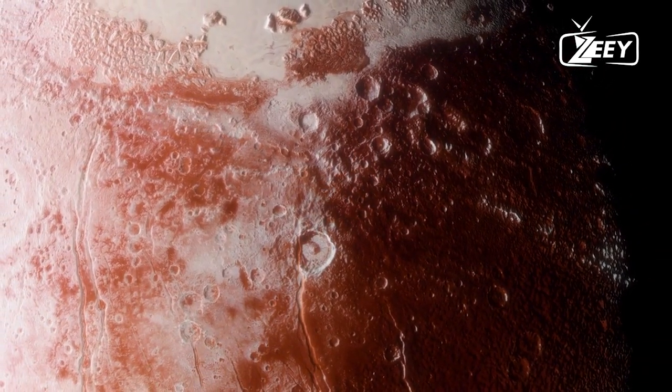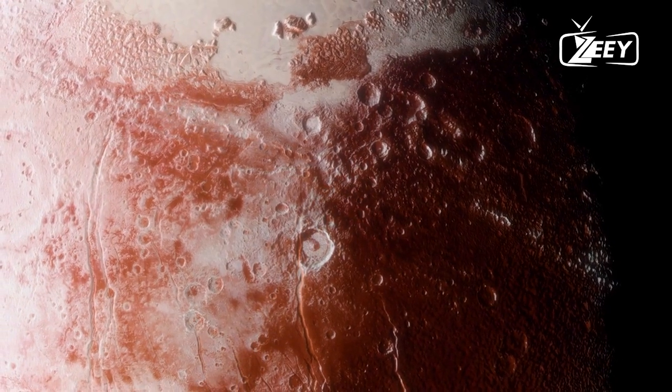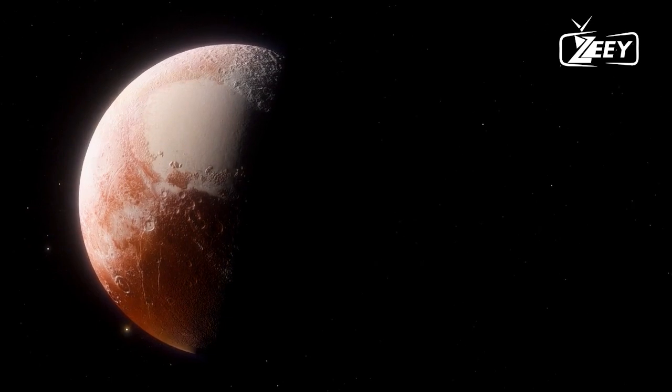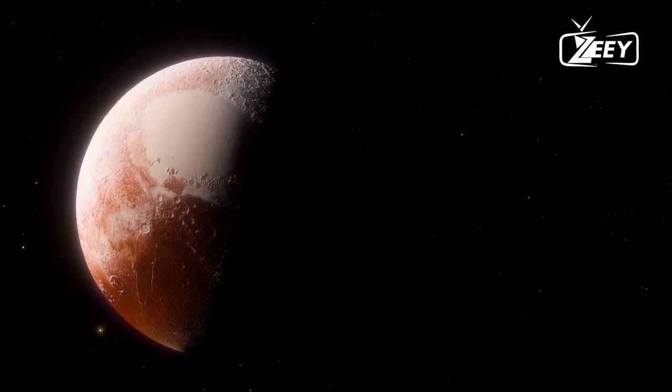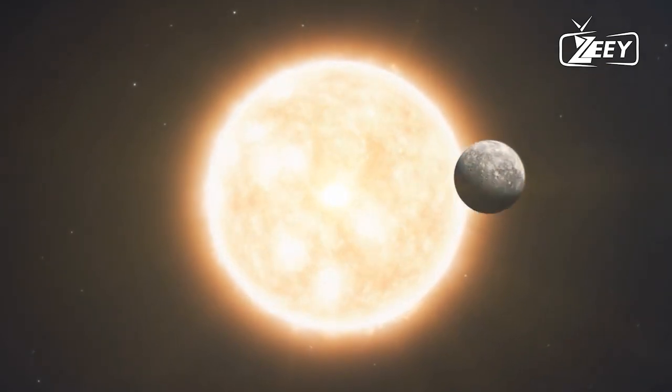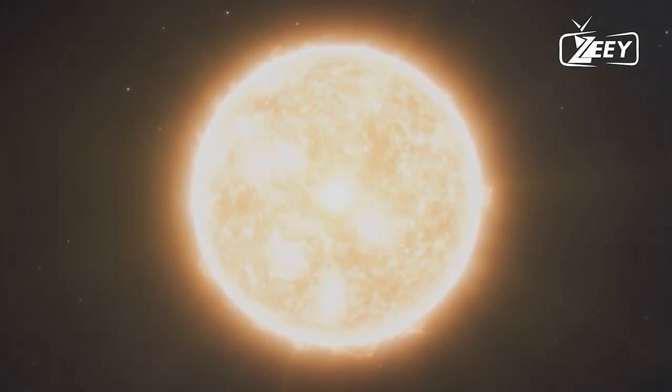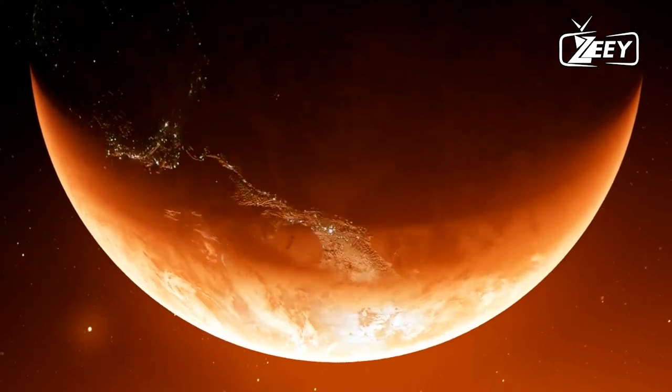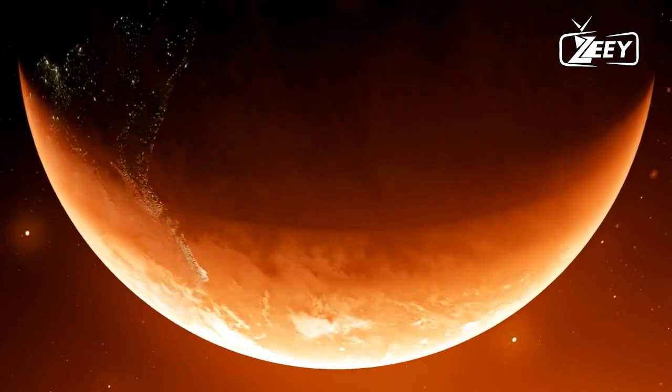Before Pluto was demoted in 2006, it was known as the ninth planet in our solar system. It is located in an area called the Kuiper Belt, which is full of many icy planets. When the International Astronomical Union developed guidelines for defining planets, Pluto was eventually deprived of its planet status and is now regarded as the largest of the dwarf planets.